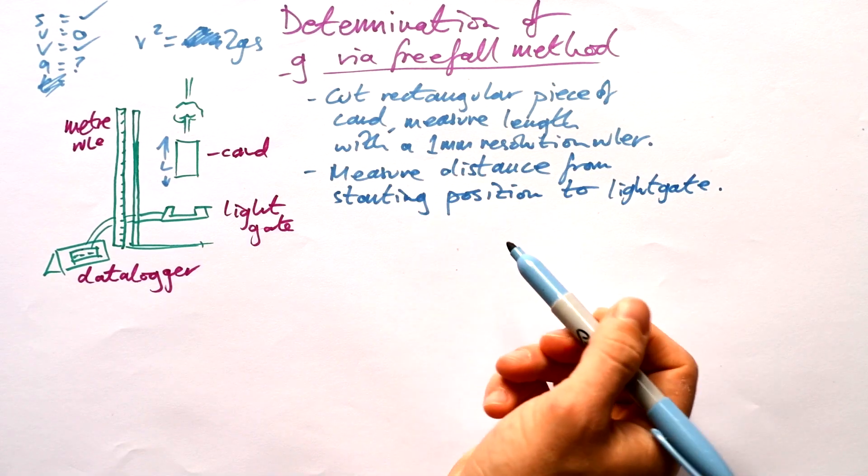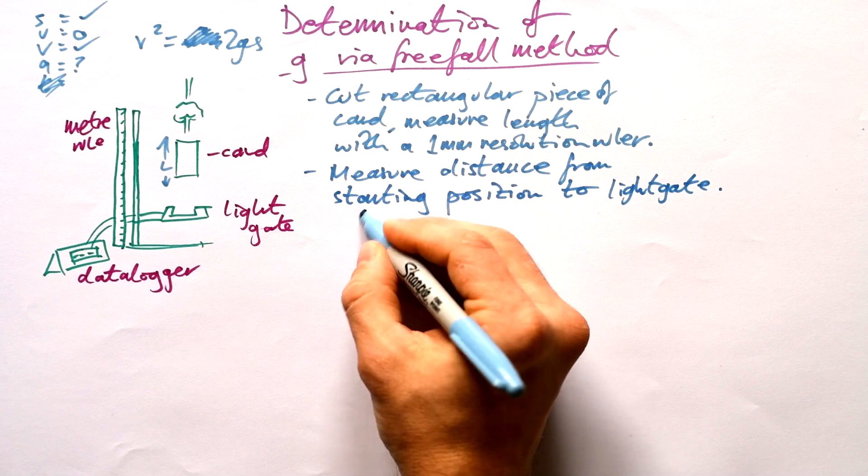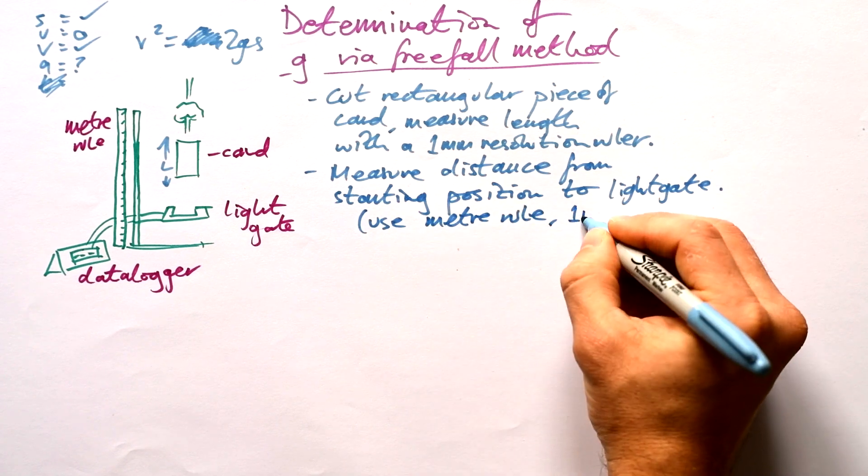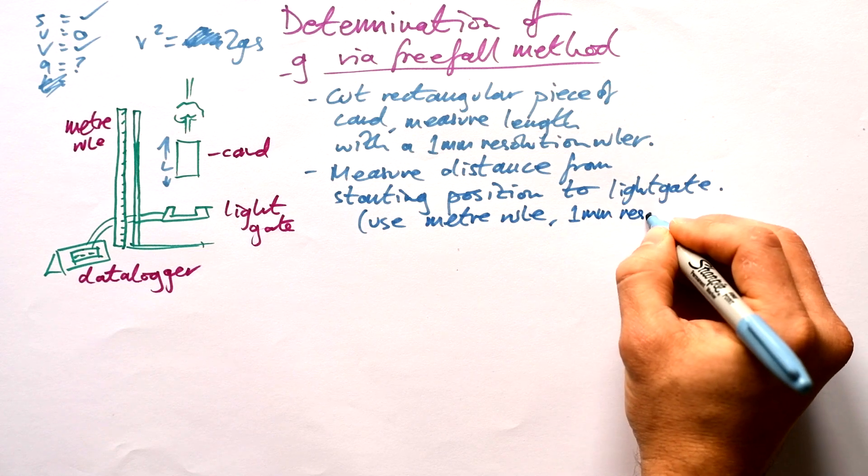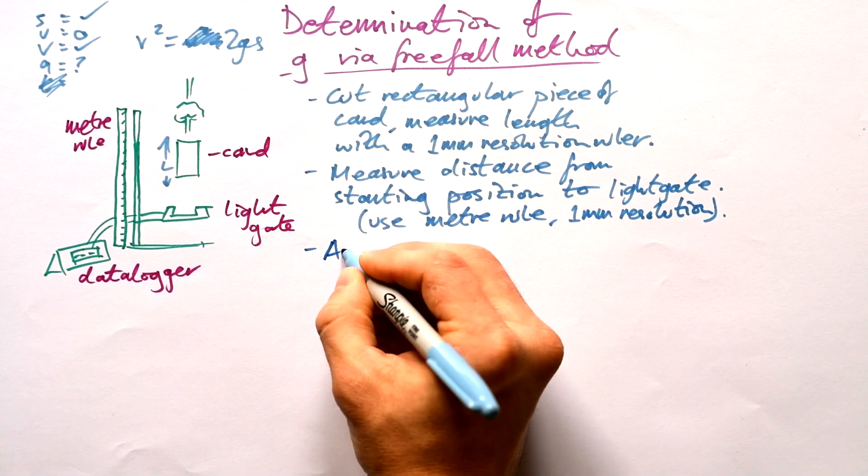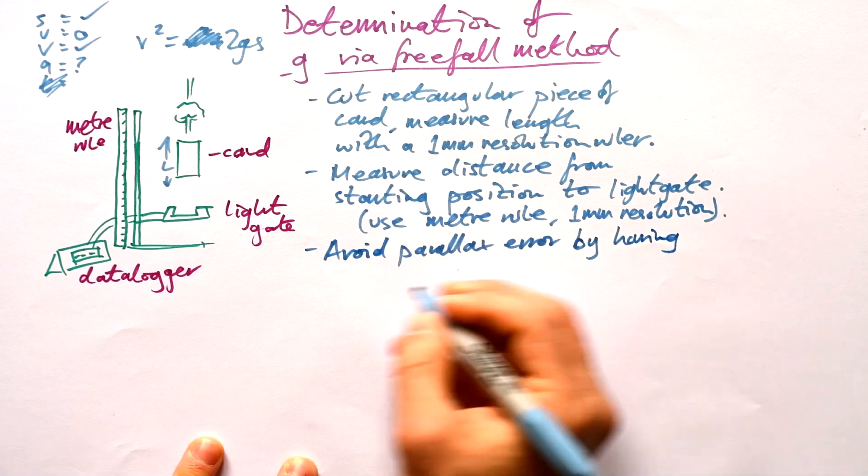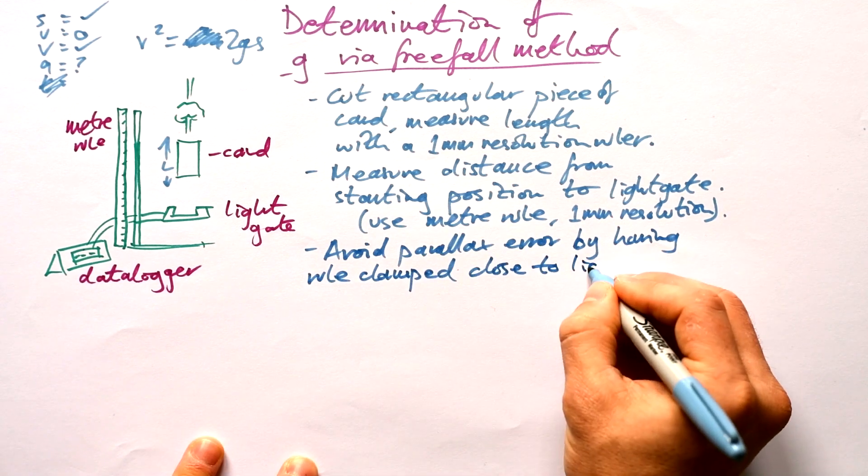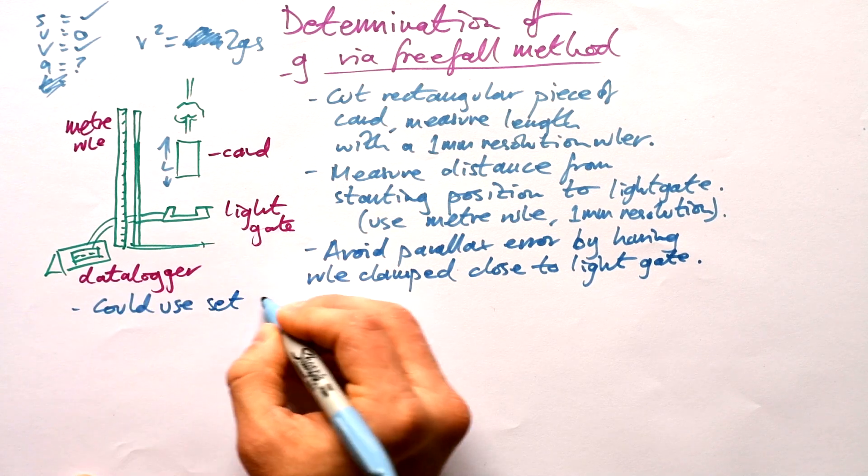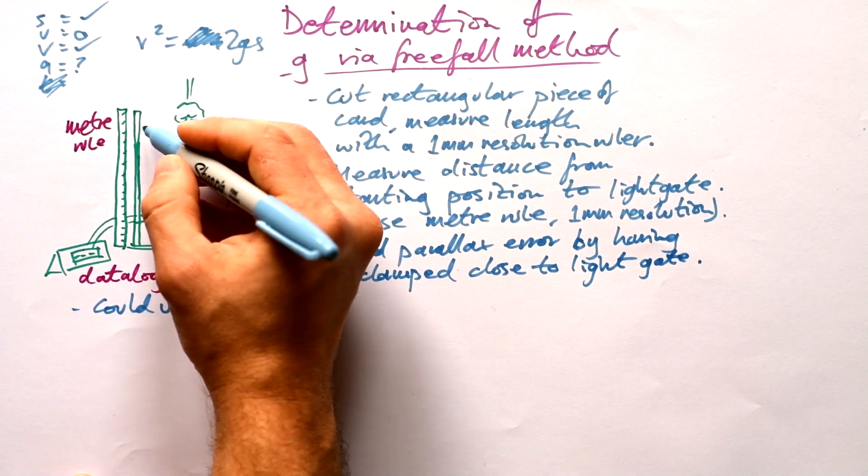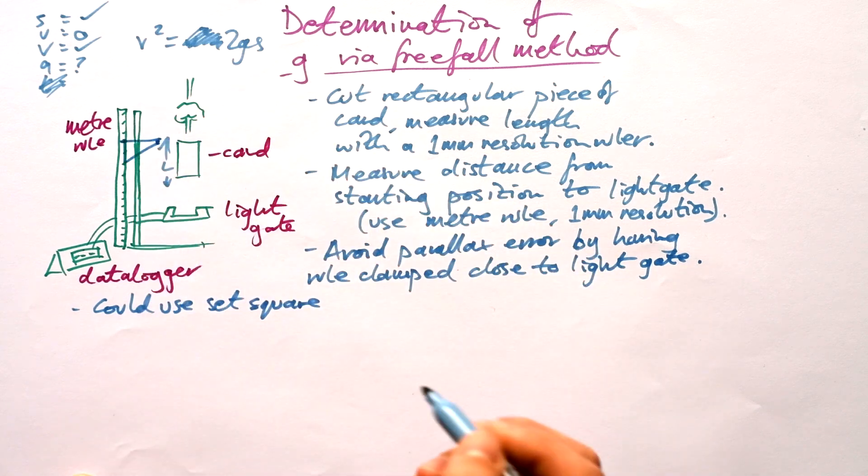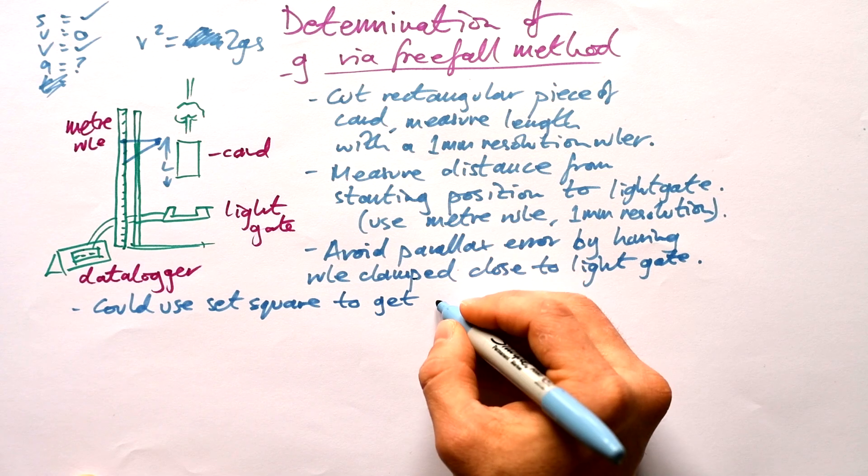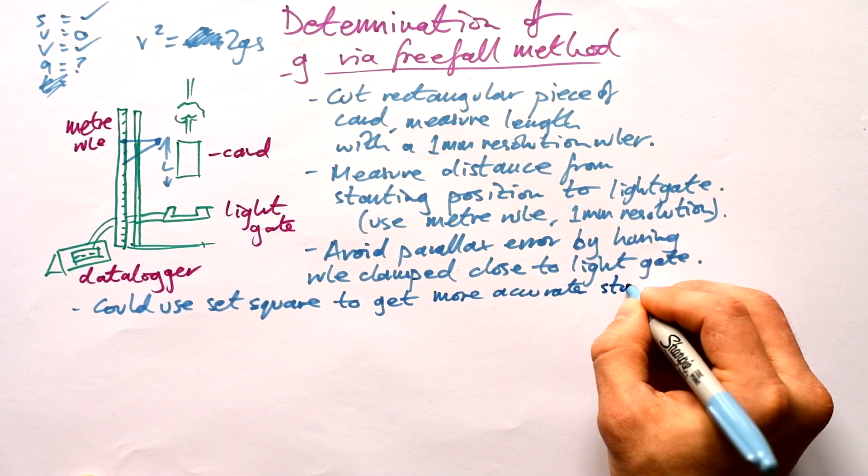Then what we need to do is measure the distance from the starting position to the light gate. And we're going to be using a meter rule for that, obviously. And we want it to a one millimeter resolution, could be one centimeter. Now I want to avoid parallax error by having the ruler clamped close to the light gate. And we could also use set square. So we could have a set square coming off the ruler like that, so we can line up our card more accurately. Could use set square to get more accurate starting points.